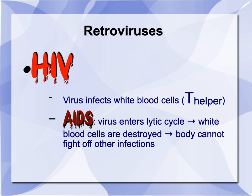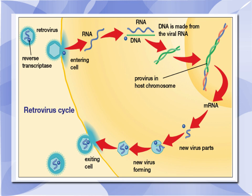The most infamous retrovirus is HIV. HIV is particularly nasty because it infects white blood cells that are supposed to protect you — a subset called the T helper cells. The infection with HIV can lead to AIDS, which stands for Acquired Immune Deficiency Syndrome. AIDS is when the virus enters the lytic cycle, white blood cells are destroyed, and if you're losing white blood cells you can't fight other infections, and then typically pneumonia sets in and causes death. HIV was a big deal back in the early 80s, but now we've progressed so much with treatment that people can be HIV positive and lead long, successful, and productive lives.